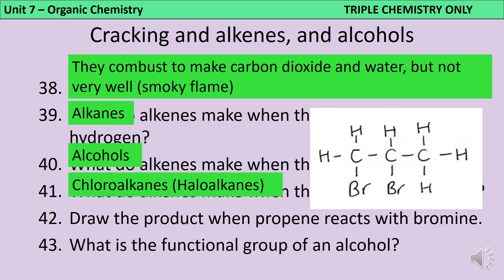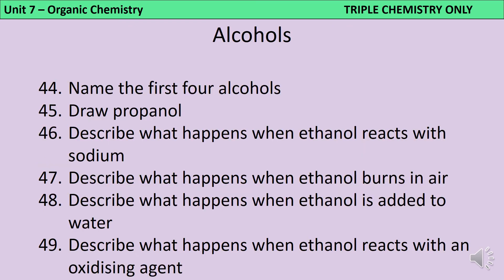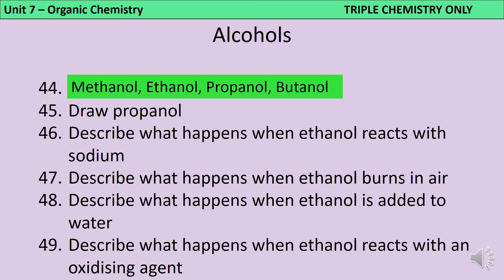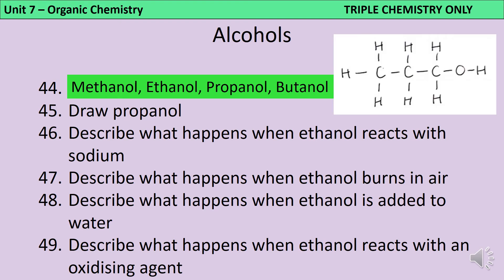The functional group of an alcohol is the OH group. The first four alcohols are methanol, ethanol, propanol and butanol. To draw propanol you start with a three-carbon chain; somewhere on that molecule it needs to have an OH group to show it's an alcohol. It doesn't matter whether this is on a terminal carbon or the central carbon, and it doesn't matter which direction the OH group is drawn.